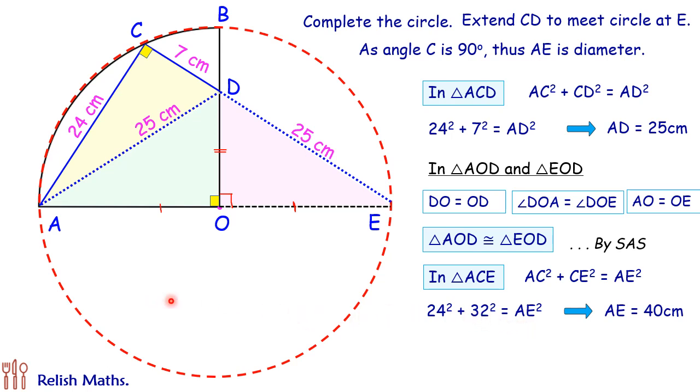If the diameter of the circle is 40 centimeters, then the radius will be 20 centimeters. As the radius is 20 centimeters, we can find the area of the quadrant, that is one-fourth of πr². So the area of the quadrant is 100π centimeter square, and that's our answer. I hope you enjoyed the solution. We'll see you in the next video.